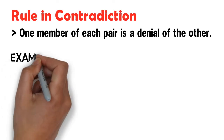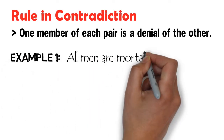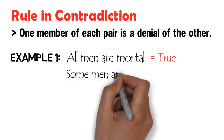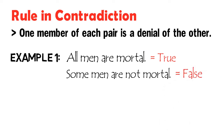If we assume that the proposition 'all men are mortal' is true, then its contradictory, 'some men are not mortal,' is absolutely false. Obviously, if it is assumed that all men are mortal, then it is impossible for at least one man to be immortal.